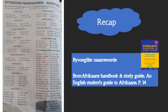So if I've got a byvoegelike naamwoord and adjective, that will be the column with the normal word. But sometimes — and it's mostly going to be like this in a test or exam — the teacher may give you a sentence, and you must put the word into the sentence so that it fits. Therefore I quickly want to run through the spelling rules of adjectives.